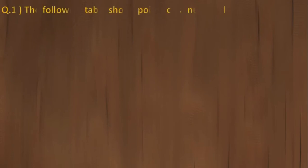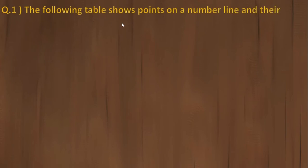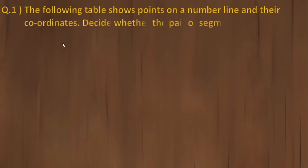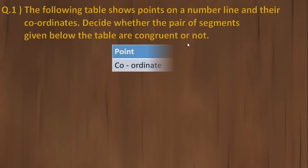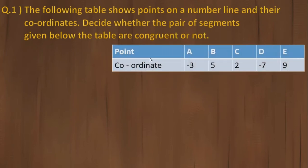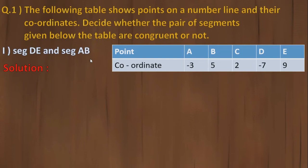The first question: the following table shows points on a number line and their coordinates. Decide whether the pair of segments given below the table are congruent or not. Students, this is your table of points and their coordinates. We have to check whether segment DE and segment AB are of the same size. To check, we need to find their distances.